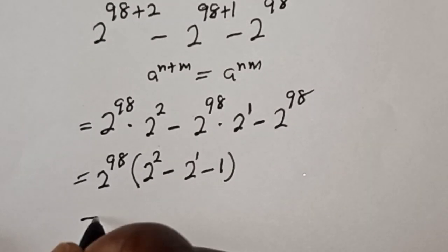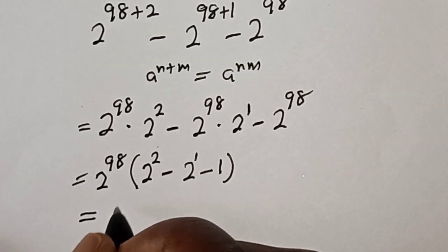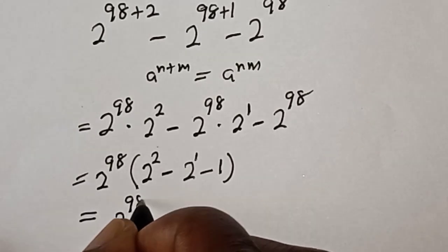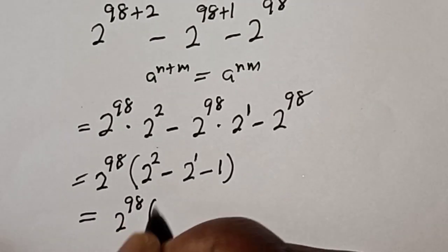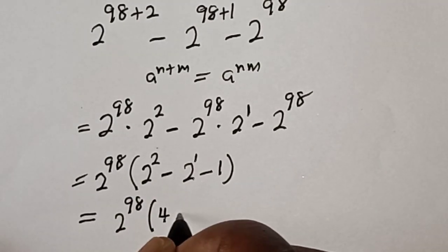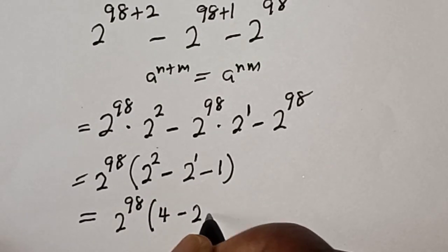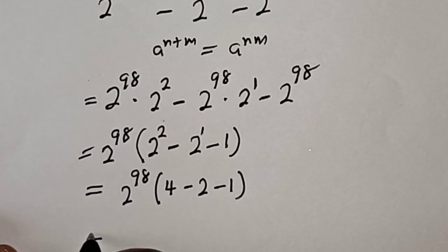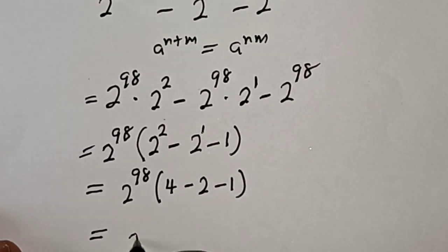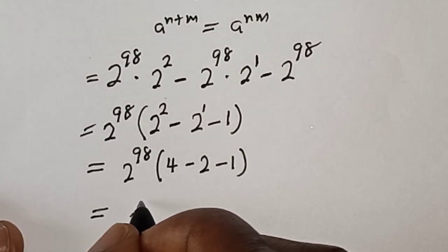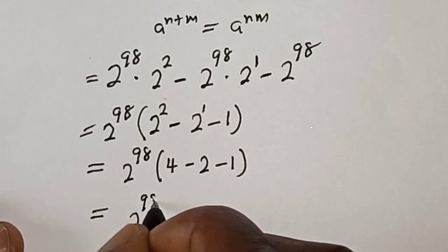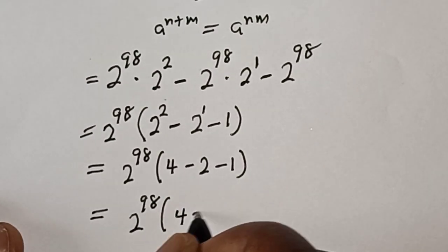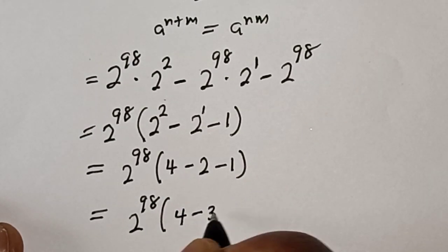Then this is equal to 2 raised to the power 98 bracket: 2 squared is 4, minus 2 raised to the power 1 is 2, minus 1. That gives us 2 raised to the power 98 bracket 4 minus 2 minus 1, which equals 4 minus 3.